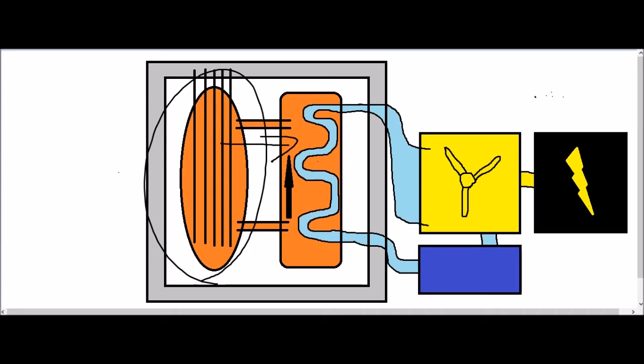This energy is carried by carbon dioxide molecules over here to heat up the water into steam, which flows into the generator, turns the turbine, and releases electricity.